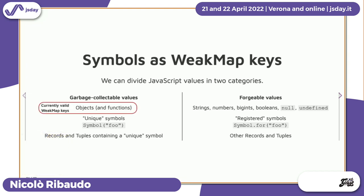Currently objects and functions are the only valid WeakMap or WeakSet keys. Why not also records and tuples containing unique symbols? The main reason is that the implementation would be really complex — it's not that you can collect records or tuples when they are not reachable anymore, but you have to check that their contents are not reachable. This is something that might be introduced in the future; we first wanted to see if it's really needed after releasing records and tuples in the wild.